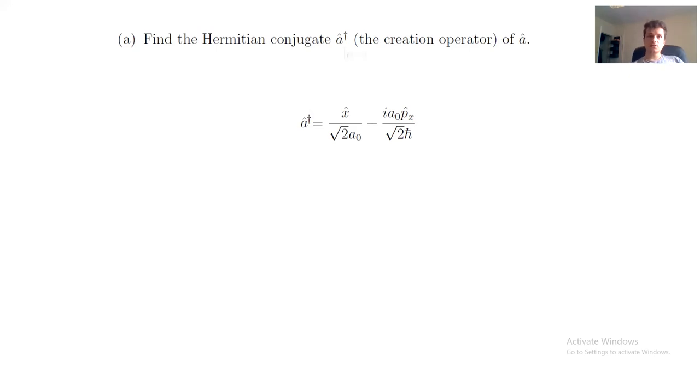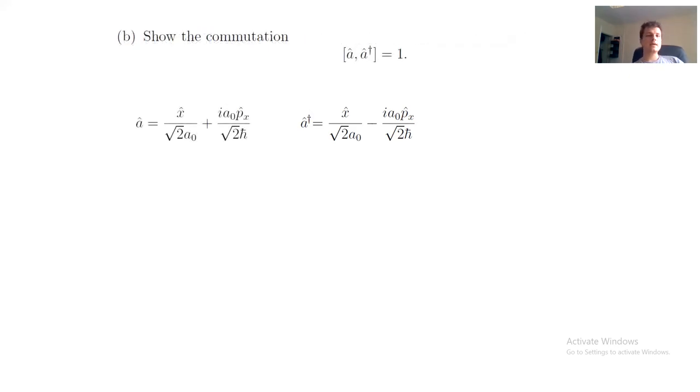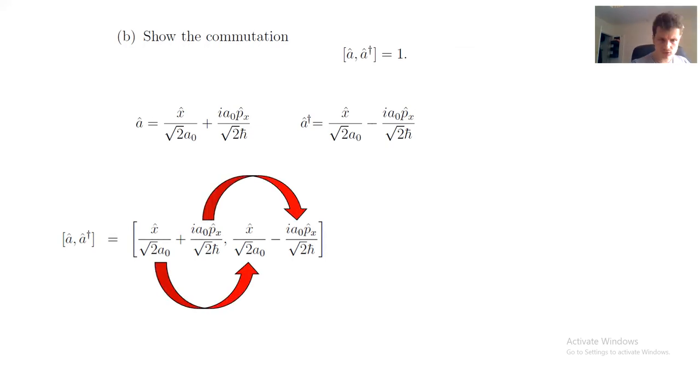The second part of this exercise consists of computing the commutator of a and a dagger. This is more of an algebraic exercise. The only thing that we have to do is to insert a and a dagger into the commutator expression. And here we have two types of expressions.